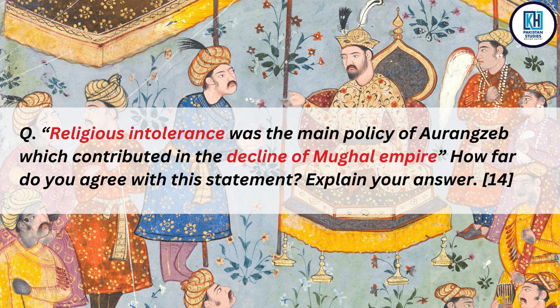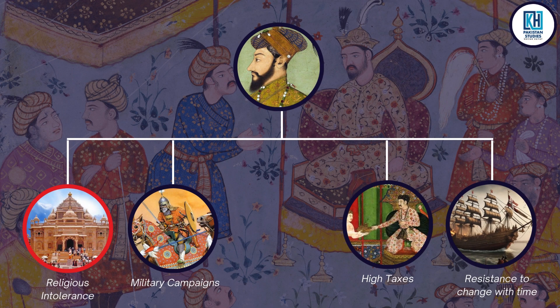As you can see, I have highlighted two things in the question in different colors. 'Religious intolerance' is the examiner's statement — the factor the examiner has given us. 'Decline of the Mughal Empire' is the main concern of the question. Now, what is the marking scheme? These are the four paragraphs we are going to make: number one — religious intolerance, number two — military campaigns, number three — high taxes over the Indians, and number four — resistance to change with time.